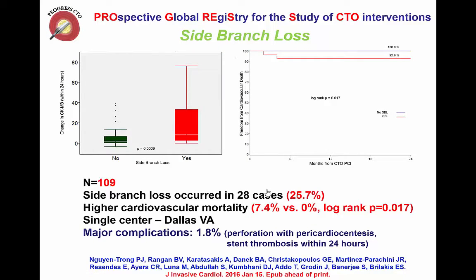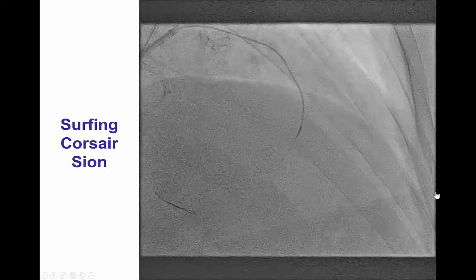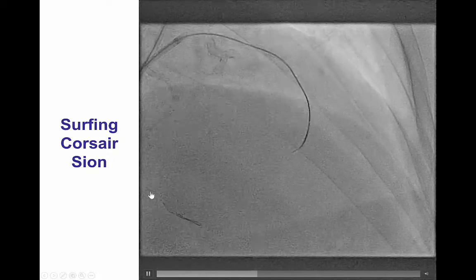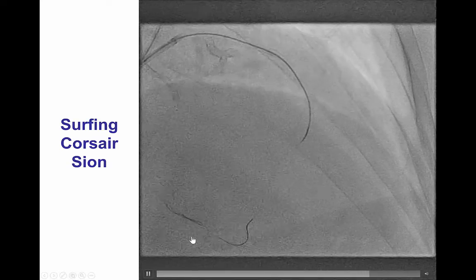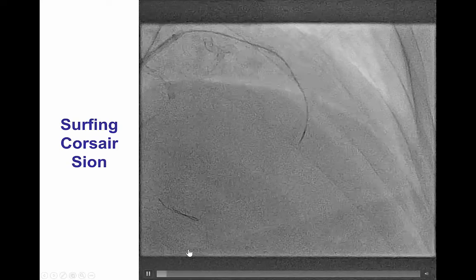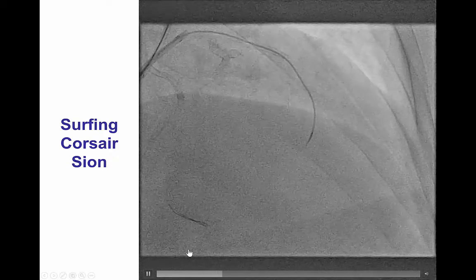It is important to achieve as complete revascularization as possible, especially for large side branches, because side branch loss is associated with higher incidence of periprocedural myocardial infarction as well as higher incidence of subsequent adverse events. As a result, after failing to re-canalize the PDA in the antegrade direction, we decided to go retrograde, especially since this patient had excellent septal collaterals.